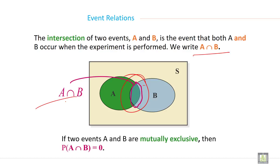If two events A and B are mutually exclusive, then probability of A intersection B is equal to 0.